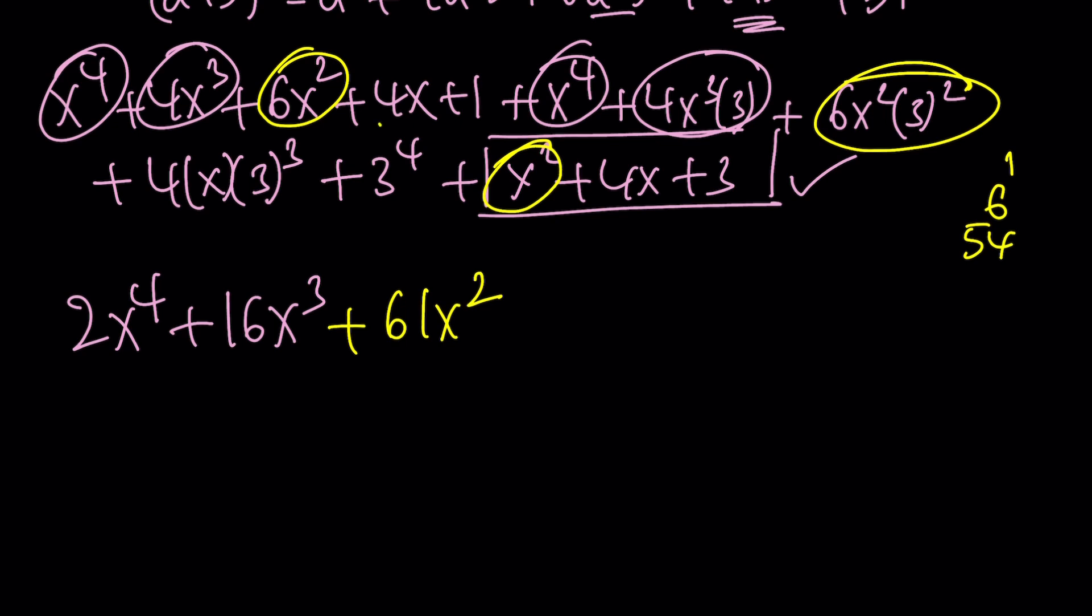And then for x, we have the 4x. And then we have the 108x. And we have the 4x again. So it's going to be 8x, 116x. And then finally, we should have a constant term. There's a 1 here and a 3 here. That's a 4. This is 81. 81 plus 4 is 85. Beautiful.